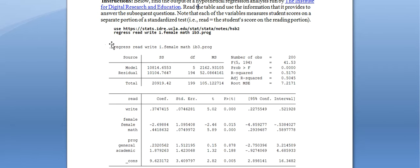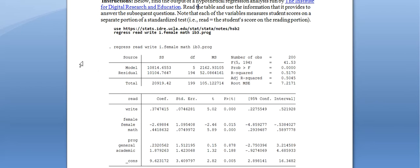We're running a regression — we know this because of the table's appearance and because the word 'regress' appears at the beginning of the command line. The dependent variable in this analysis is 'read,' because it is the first variable listed and the only one isolated from the others by lines in the main body. Our explanatory variables are write, gender (labeled female), math, and general academic progress.